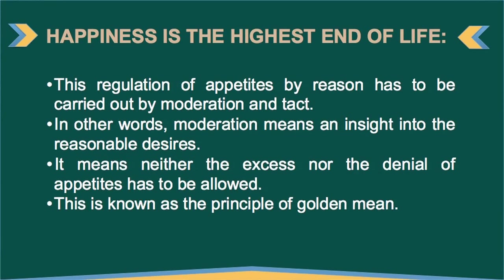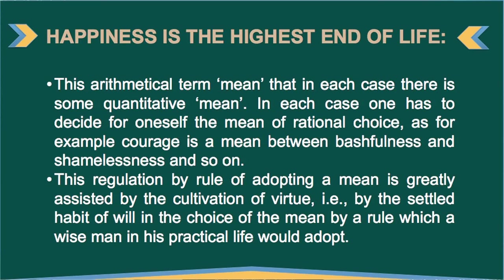Neither appetite has to be excluded as asceticism wrongly does, nor do appetites have to be satisfied as hedonism holds. Rather, appetite should be regulated by reason. This regulation of appetites by reason has to be carried out by moderation and tact. Moderation means an insight into the reasonable desire — neither excess nor denial of appetite is allowed. This is known as the principle of the golden mean. In arithmetical terms, in each case there is a quantitative mean; one has to decide for oneself the mean of rational choice. For example, courage is a mean between rashness and cowardice. This regulation by rule of adopting a mean is assisted by the cultivation of virtue.